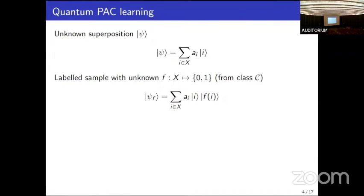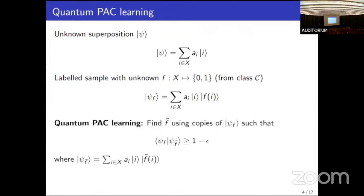Notice that this labeled quantum sample is well-defined for every binary function f. However, we are mainly interested in the case where f belongs to a known function class C. The problem of quantum PAC learning is: given access to these quantum samples, find an approximation f-tilde to f such that the corresponding labeled quantum samples are close — their inner product is at least one minus epsilon.